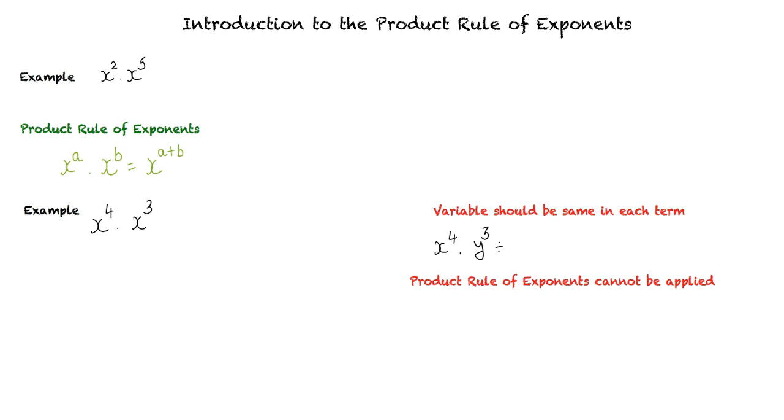Let us continue with our example problem. Here we have the same variable x in both the terms and hence we can use the product rule of exponents. Now, we would apply the product rule of exponents. x^a times x^b equals x^(a+b). Hence we have x^4 times x^3 equals x^(4+3) which equals x^7.